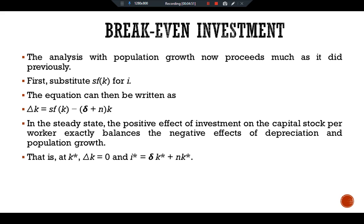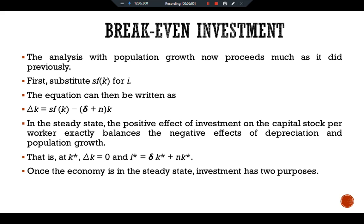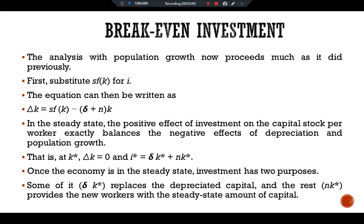At k*, delta k equals zero and i* equals delta·k* plus n·k*. Once the economy is in the steady state, investment serves two purposes: some investment, delta·k*, replaces depreciated capital, and the rest, n·k*, provides new workers with the steady-state amount of capital. Let's see how population growth works in the Solow growth model while achieving the steady-state equilibrium level.